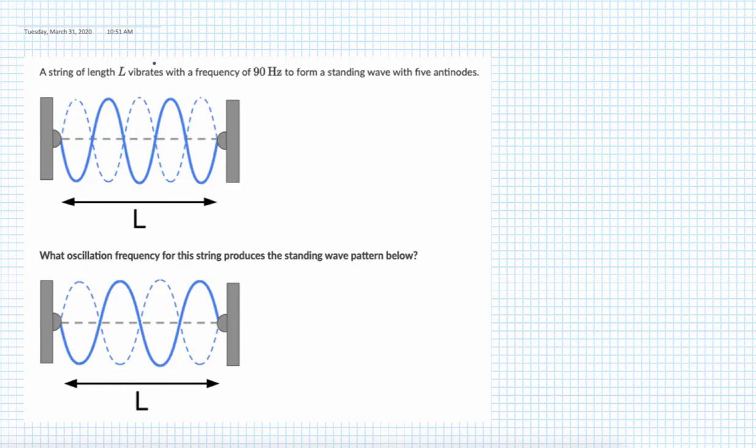I'm making this to show you how to solve some problems on wave harmonics on a string. The first two are taking a wave and figuring out the fundamental frequency, then using that to figure out other frequencies of harmonics. The third one is a simple example of how to solve for the wavelength and the frequency when a note gets played.